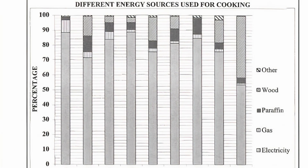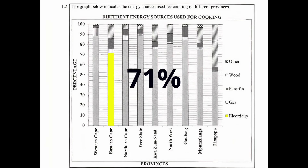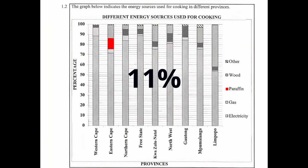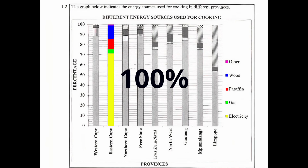In this graph, energy sources are represented as bars that are stacked on top of each other. When all the types of energy sources are added up and stacked, the total energy source for a province will equal 100%, and this applies to every province in South Africa. For example, in Eastern Cape: electricity accounts for about 71%, gas about 4%, paraffin about 11%, wood about 13%, and other energy sources about 1%. When we add all of these percentages up, we get a total of 100% for that province.